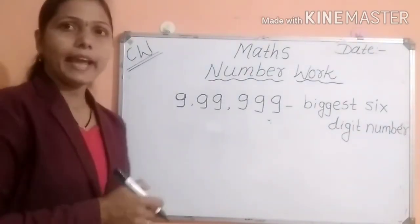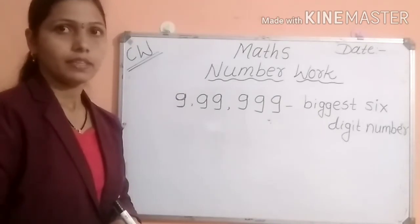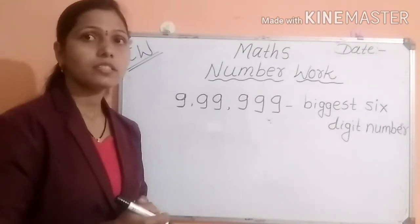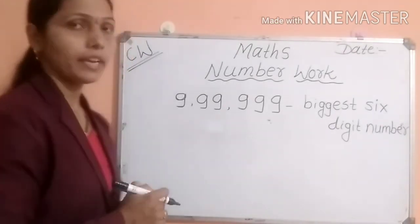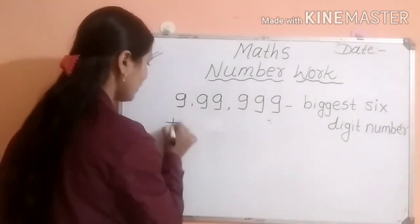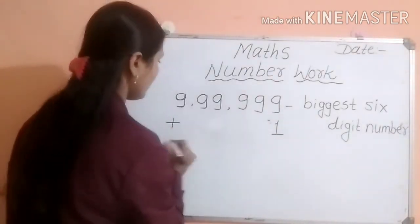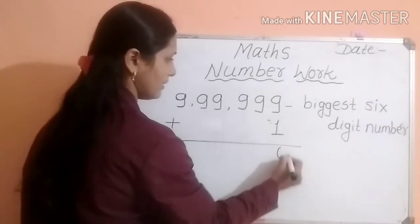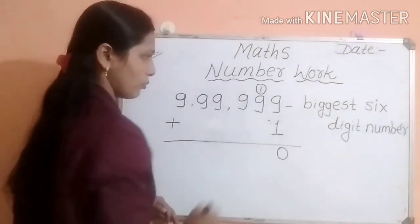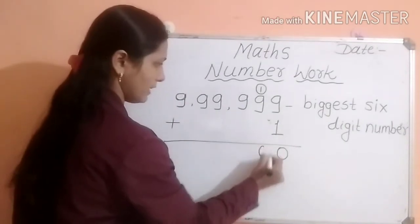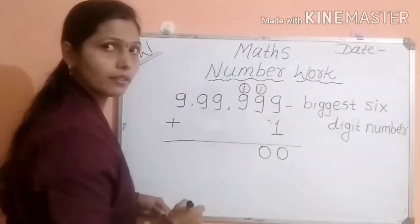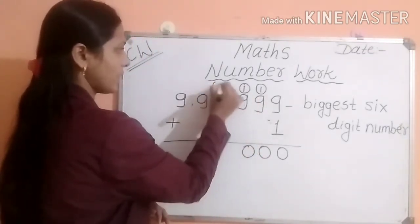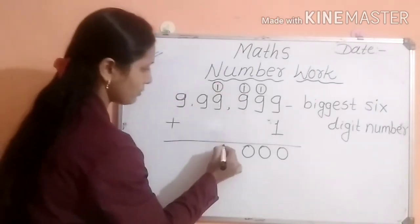When we add one more to it, we will get the smallest seven-digit number. Let me show you: nine plus one is ten, one carry over; nine plus one is ten, one carry over; and continuing like that for all six digits.